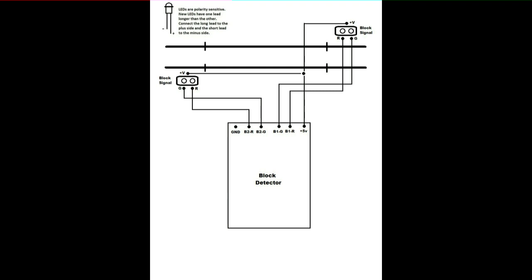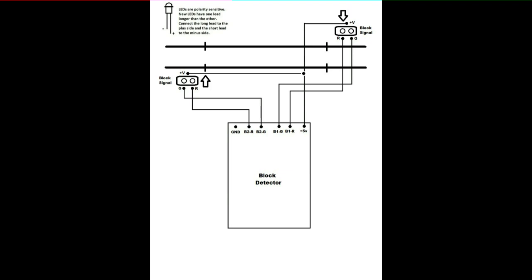The next block diagram shows how to hook up the outputs of one block detector to the LEDs of the two block signals on each end of an isolated section of track associated with the block detector. I used the plus 5 output, which is directly connected to the plus 5 input of the board, to feed the plus side of all four LEDs of the two block signals. Then I connected one set of outputs of the block detector, B1G and B1R, to the minus leads of one block signal. B1G goes to the green LED and B1R goes to the red LED. Then connect the other two outputs, B2G and B2R, to the minus leads of the other block signal.